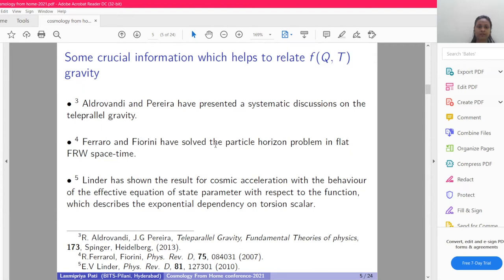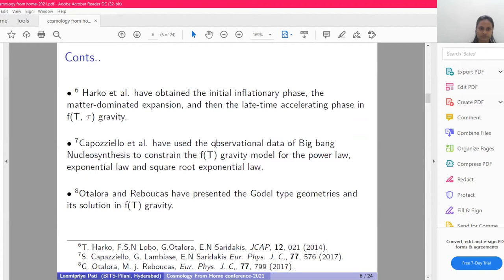Linder has shown the result for cosmic acceleration by taking the behavior of the effective equation of state parameter with respect to the function which describes the exponential dependency on torsion scalar. Harko and his group have obtained the initial inflationary phase, the matter-dominated expansion, and the late-time accelerating phase in f(Q,T) gravity. Capozziello and his group have used observational data of Big Bang nucleosynthesis to constrain the f(Q,T) gravity model for power law, exponential law, and square root of exponential law. Ottolora and Rebouças have presented the Gödel-type geometries and its solution in f(Q,T) gravity.